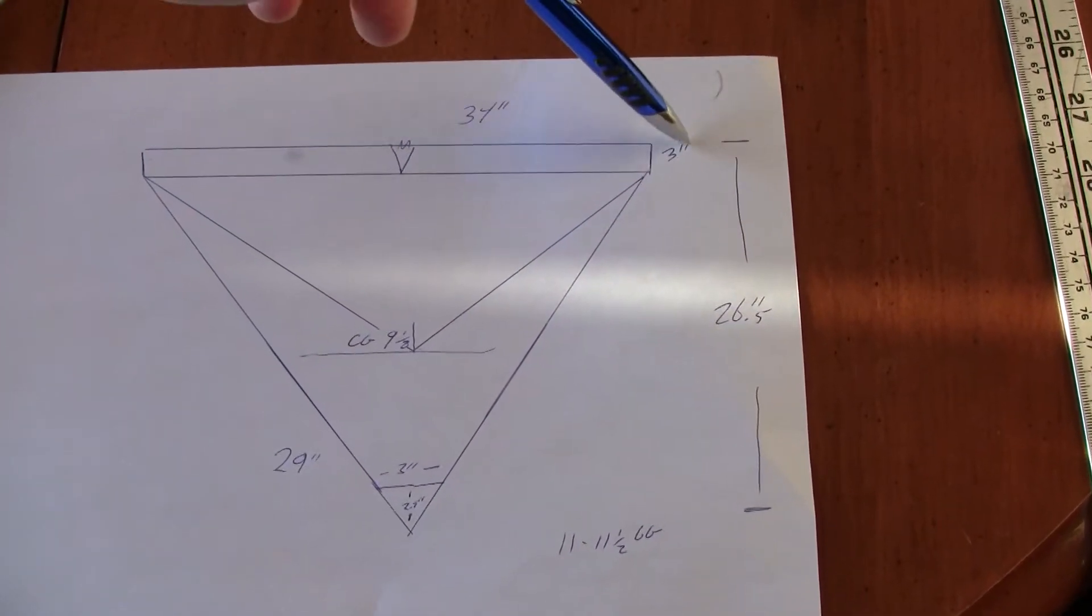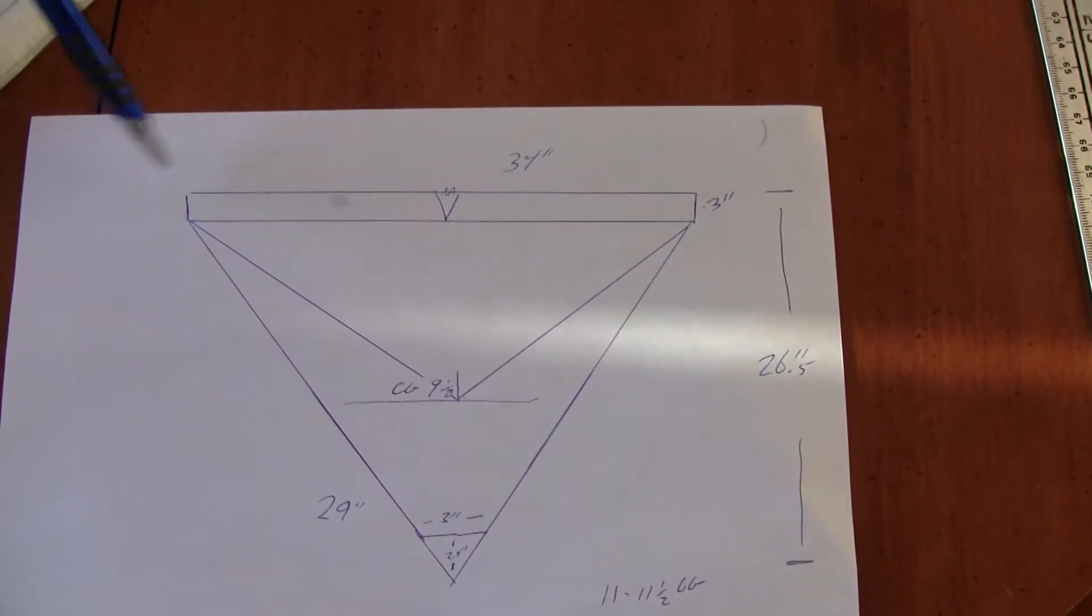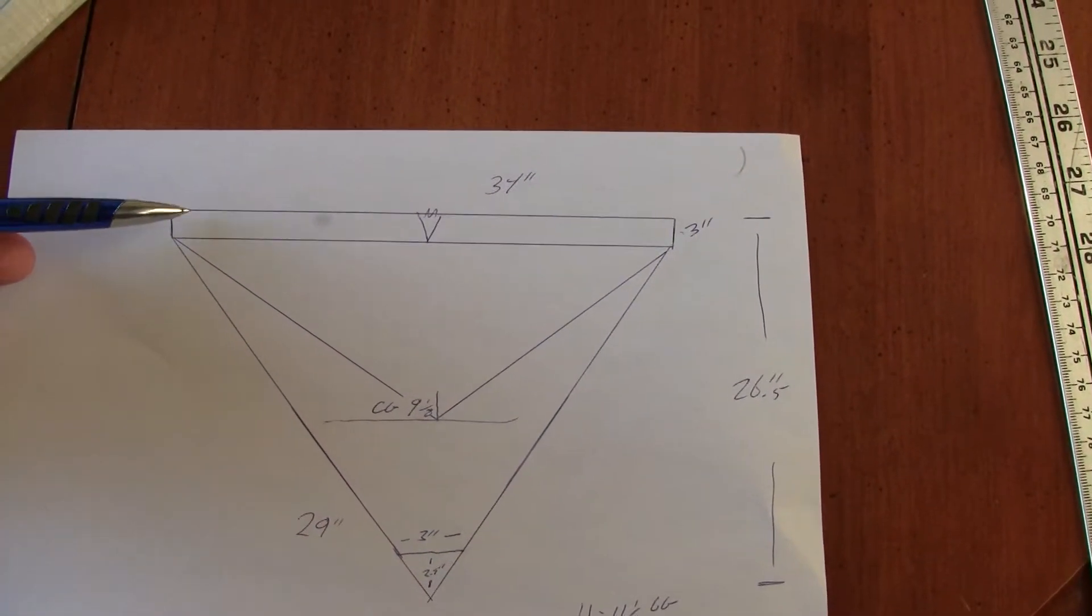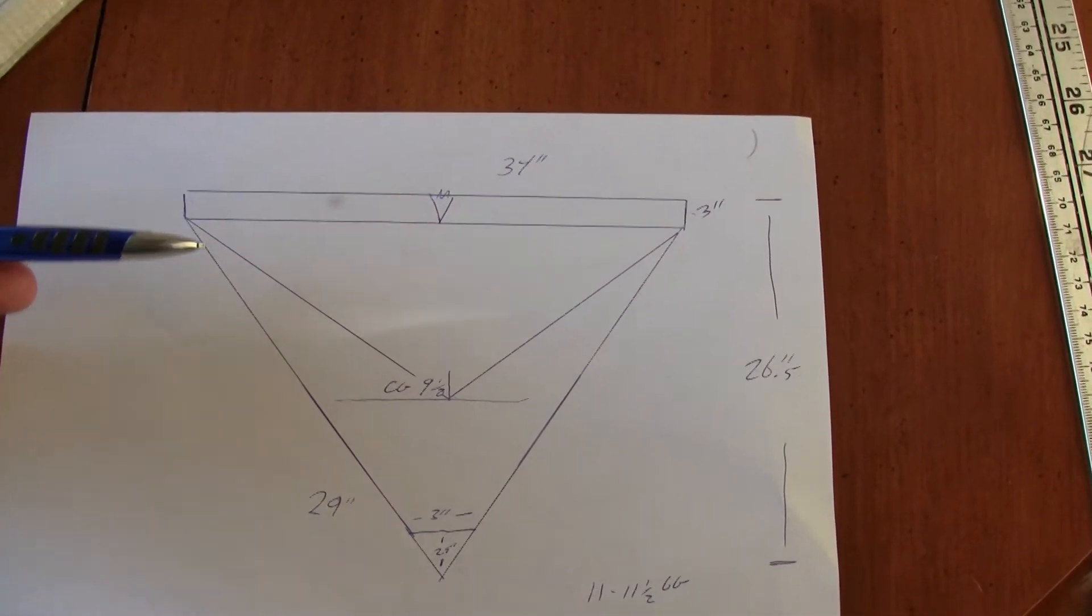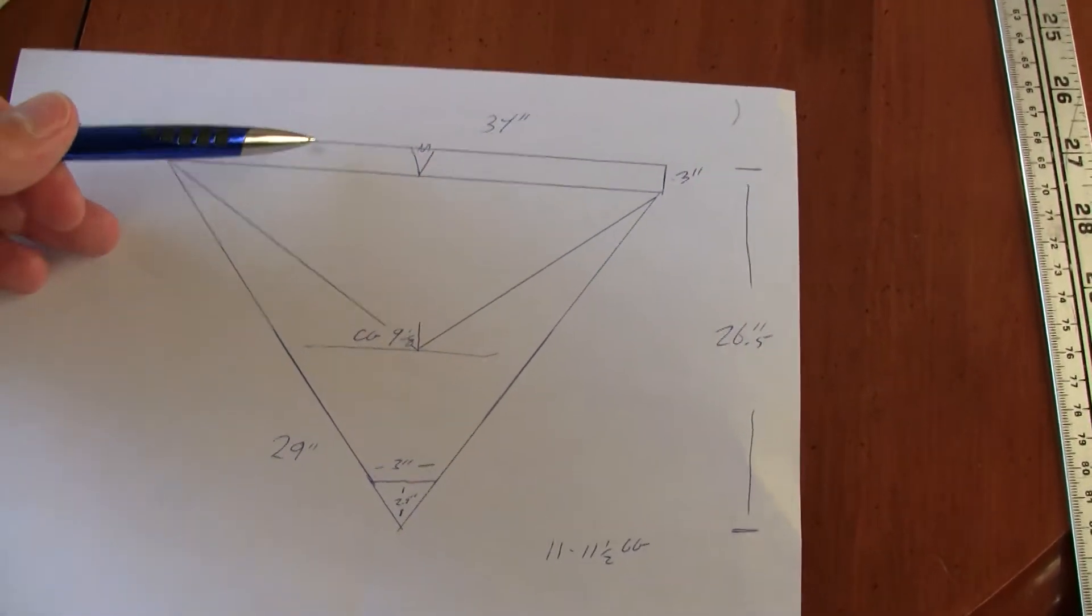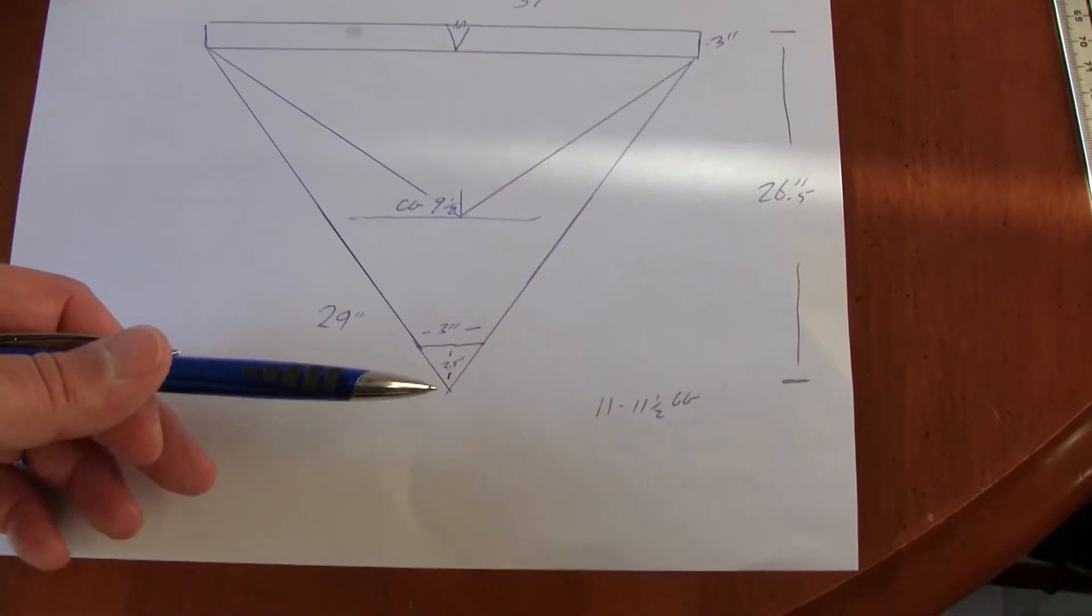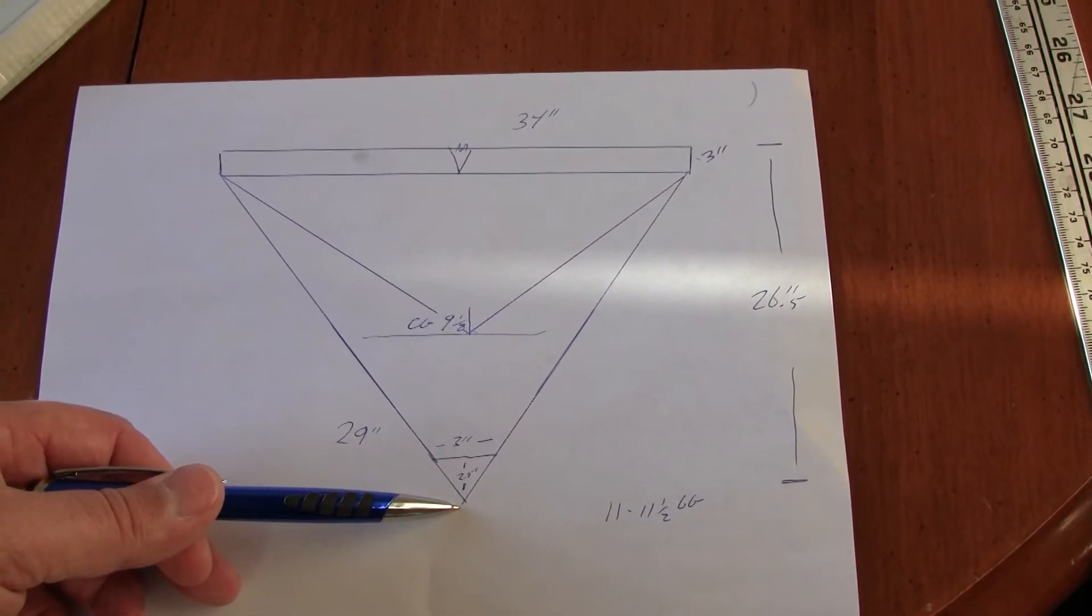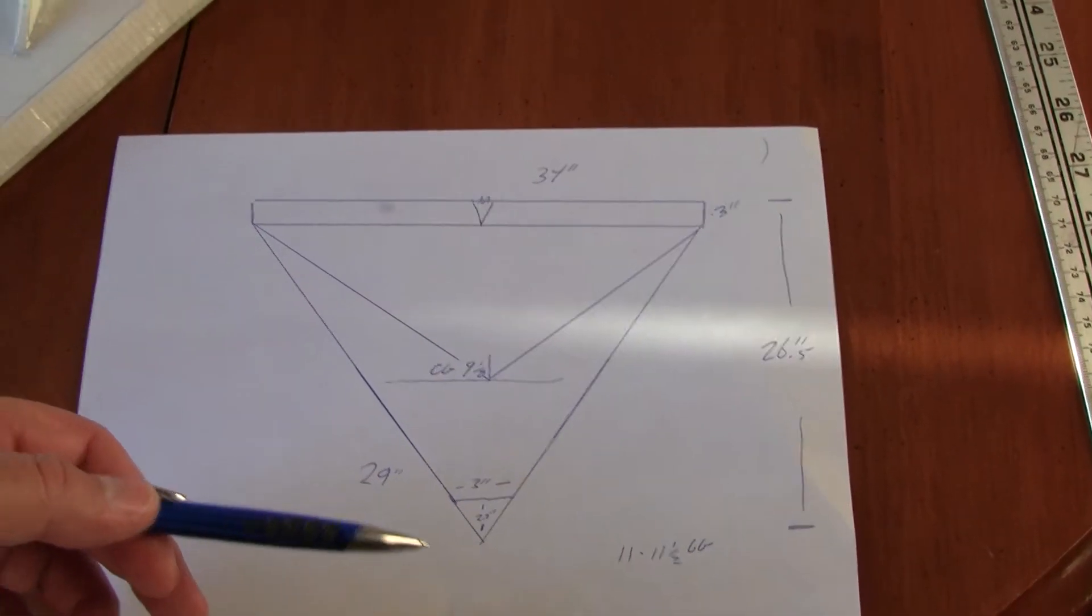From here to this side is 34 inches. The elevons themselves are three inches. The full length from here to the very tip would be 26 and a half inches.